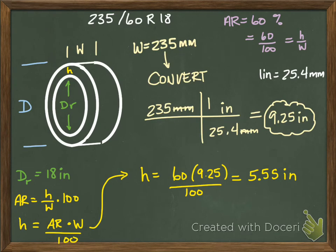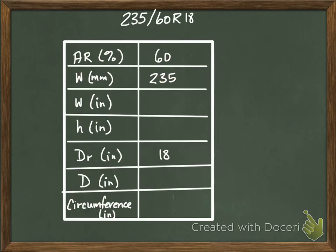Then my width we calculated. My width was 9.25 inches, so I'm gonna put that on. Then I calculated my height and my height was 5.55 inches.